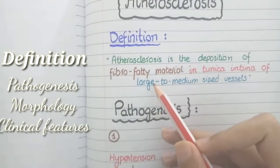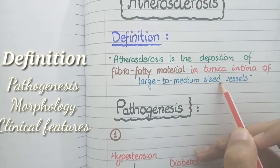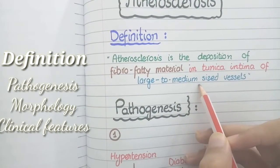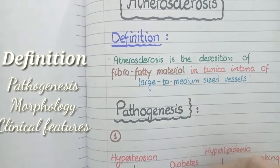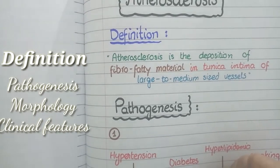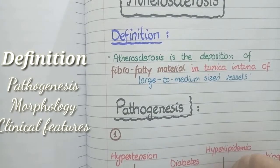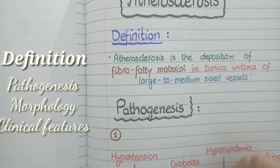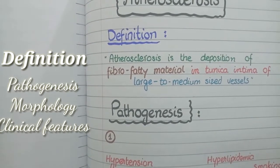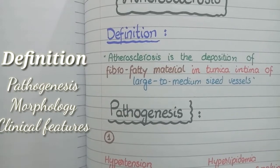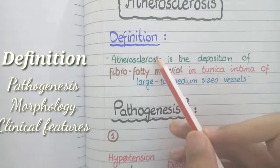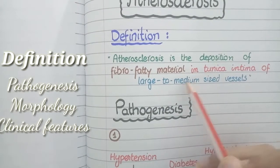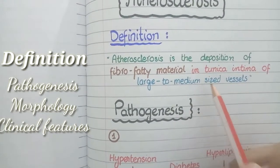The third key point is large to medium sized vessels. Large vessels means the aorta, and medium sized vessels means arteries supplying the organs, such as coronary arteries, popliteal arteries, and carotid arteries. Atherosclerosis does not affect small sized vessels such as arterioles. So atherosclerosis is the deposition of fibro-fatty material in the tunica intima of large to medium sized vessels.